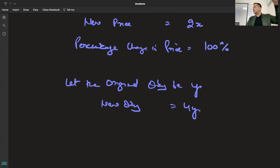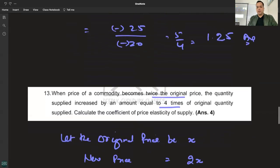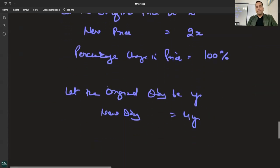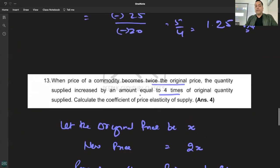When quantity supplied increased by four times - price is 2X but quantity increased by four times. So the change means the new quantity is 5Y.